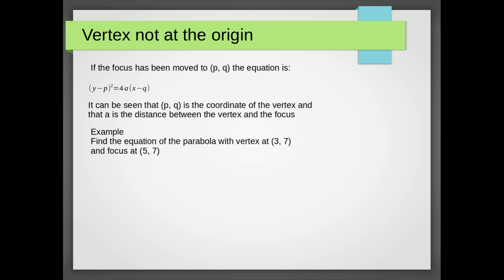Example: find the equation of the parabola with a vertex at (3, 7) and a focus at (5, 7). Here p is 7 (the y-value of the vertex) and q is 3 (the x-value). The distance between the vertex and the focus is two, so a = 2. The equation is (y − 7)² = 8(x − 3), because 4 × 2 = 8.